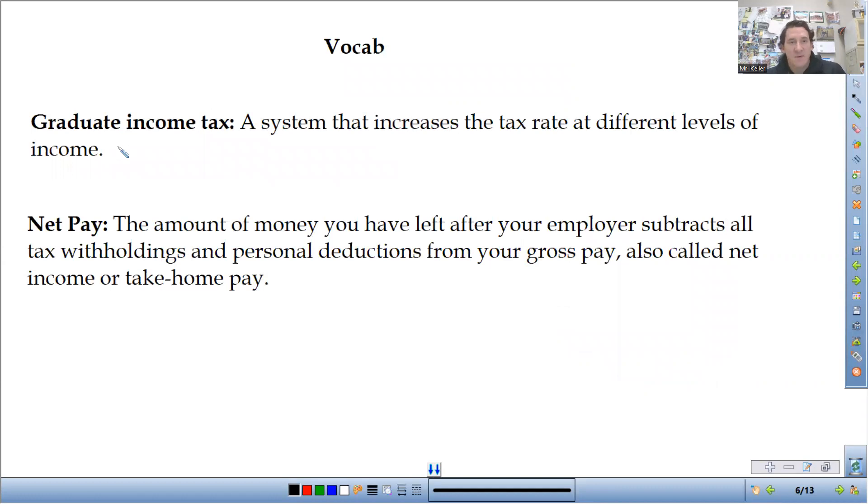So vocab for the section: graduated income tax, a system that increases the tax rate at different levels of income.